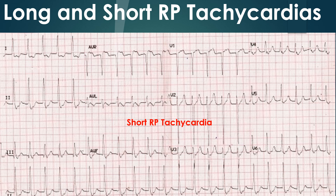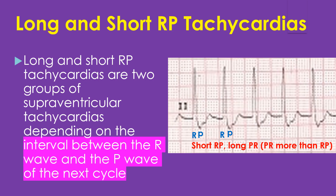This is a classification of supraventricular tachycardias based on the RP interval. Long and short RP tachycardias are two groups of supraventricular tachycardias depending on the interval between the R wave and the P wave of the next cycle. In the ECG shown here, RP is shorter and PR interval is longer than the RP interval — this is a short RP tachycardia.